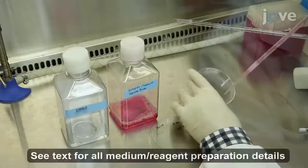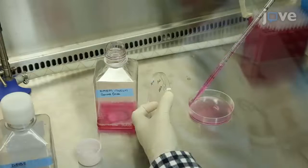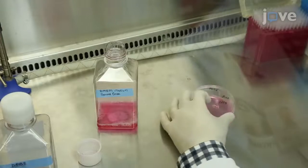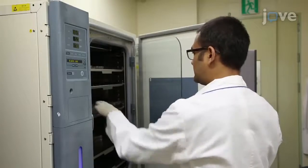When a 100 mm dish of HeLa cell culture reaches confluency, replace the supernatant with 10 mL of HeLa cell culture medium without FBS and return the dish to the cell culture incubator.